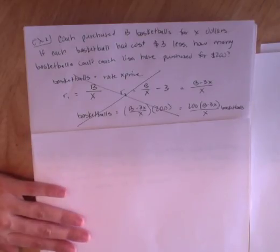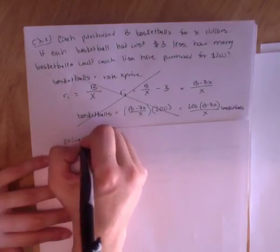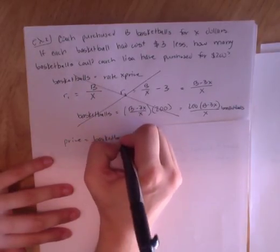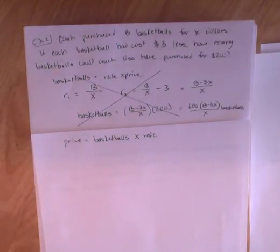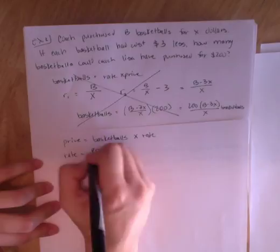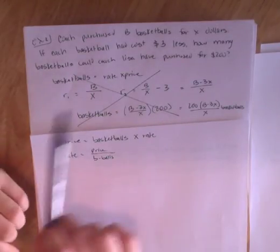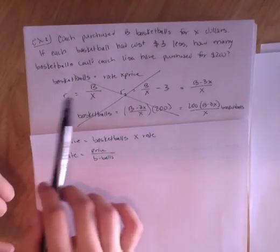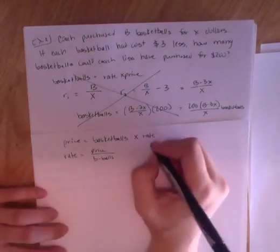But the problem is our price is per basketball. This is actually not how you should do this. I wanted to show you that it's different than the last problem because our new way we'll have price is basketballs times rate because we're looking at price per basketballs. So my rate is price per basketballs.